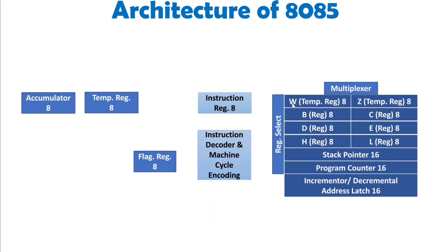You might be wondering about W and Z. These are temporary registers not available to programmers — they are used internally by 8085. For some instructions I'll separately explain how W and Z are utilized. There is also a temporary register and a flag register, which we'll discuss when we cover ALU operation. Here we also have the instruction register and instruction decoder, which I'll explain when covering how 8085 functions.